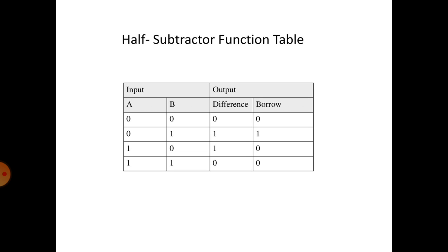Two inputs means 2 power 2, which is equal to 4 combinations: 0-0, 0-1, 1-0, 1-1. Input 0-0 means difference is 0, borrow is 0. Input 0-1 means difference is 1, borrow is 1. Input 1-0 means difference is 1, borrow is 0. Input 1-1 means difference is 0, borrow is 0.